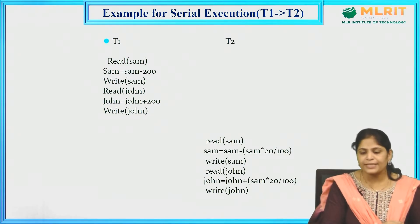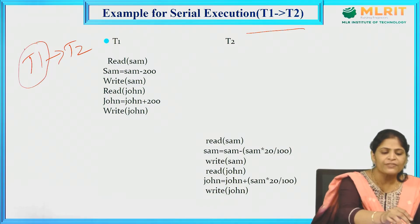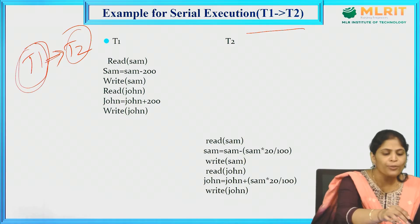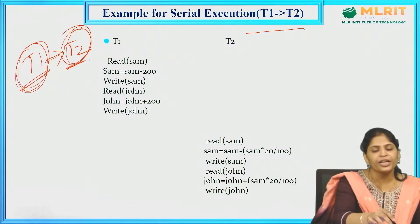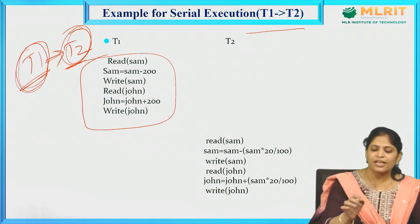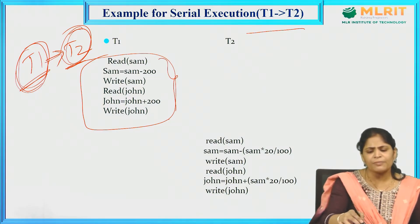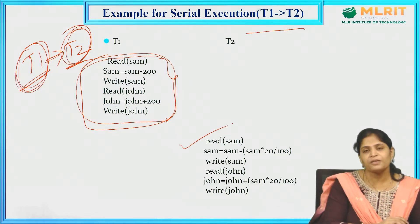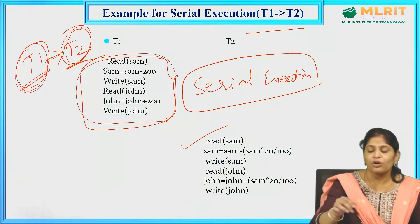Let us consider one simple example. Here I have represented what a serial execution T1 tends to T2 means. T1 is transaction 1 and T2 is transaction 2. T1 tends to T2 means we are performing T1 first, and after completion of T1, we are executing T2. Transaction 1 includes some set of operations — a series of operations to be performed — and after completion of this transaction, the next transaction T2 has started. This is what we call serial execution.